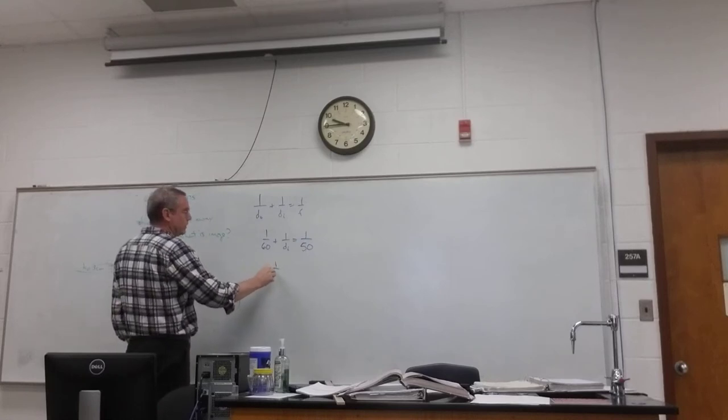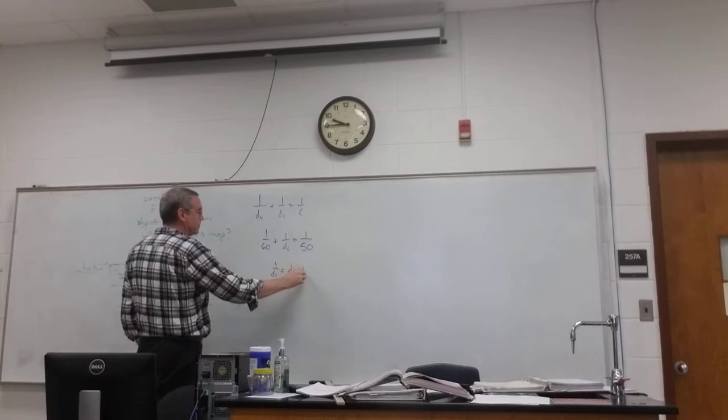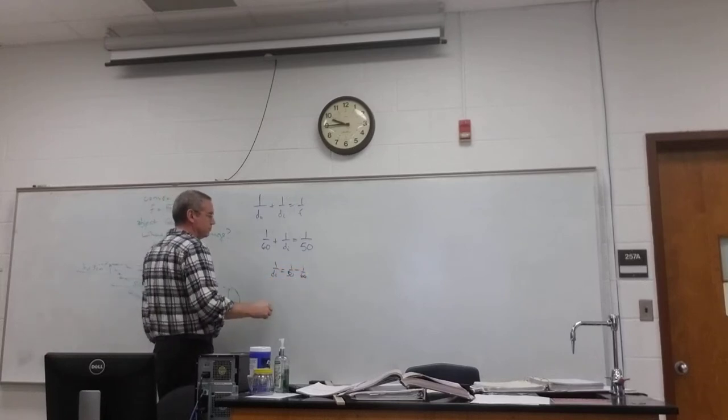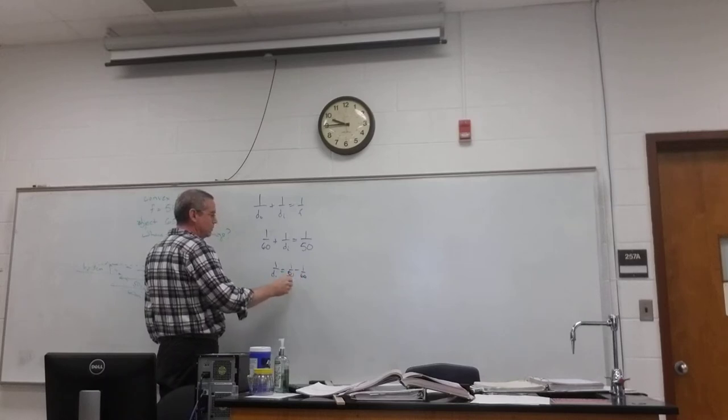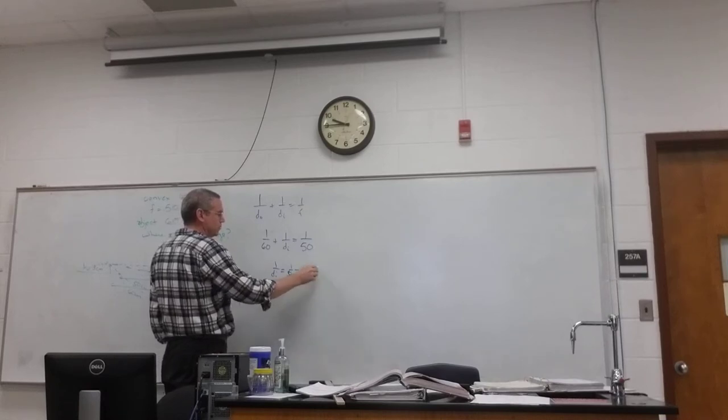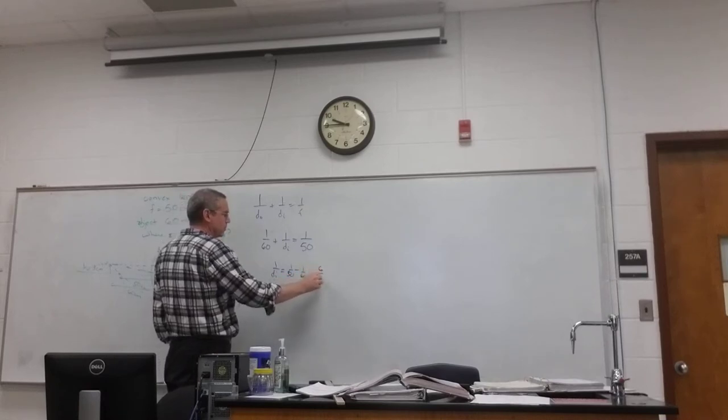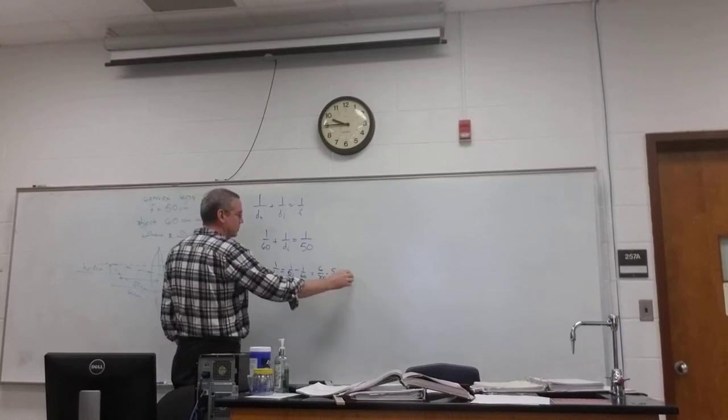So we end up with 1 over DI is one-fiftieth minus one-sixtieth. And so 300 is the common denominator. So this becomes 6 over 300 minus 5 over 300, which is 1 over 300.